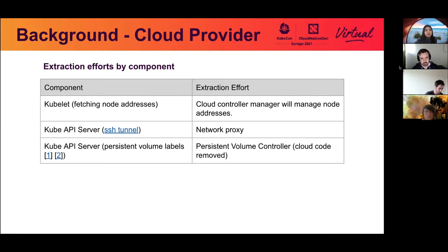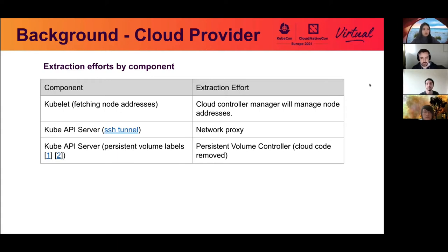Additionally, the other area of code in Kubelet was fetching node addresses, which is being replaced in the cloud controller manager and the node controller. A couple other areas worth mentioning: the API server had the capability to do SSH channels, but this was related to cloud provider code because the API server had flags that enabled SSH channels only on GCP, and that effort is being replaced by the network proxy effort. Finally, the kube API server initially had a persistent volume labeling mutating webhook, and that was already replaced by the persistent volume controller, so all the cloud code was removed from that.